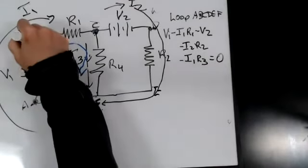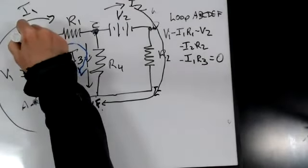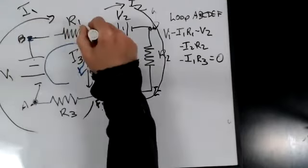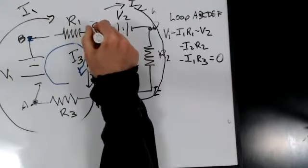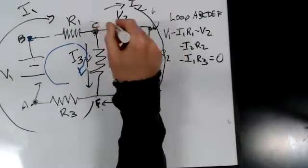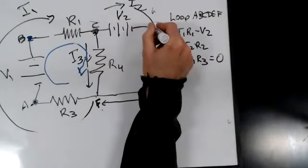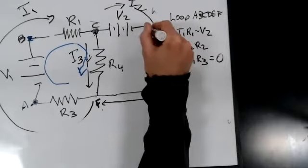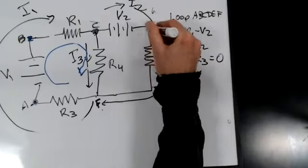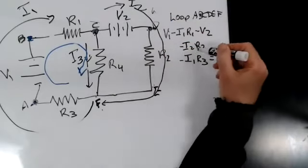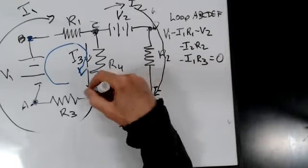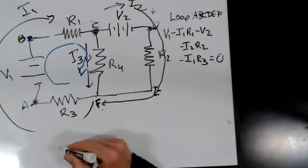Continuing around the loop: it's minus I2R2 — going in the direction of the current — and then minus I1R3, and that equals zero. So: positive V1, minus I1R1, minus V2, minus I2R2, minus I3R3 equals zero.